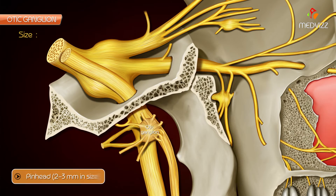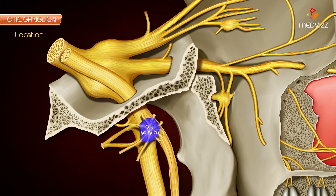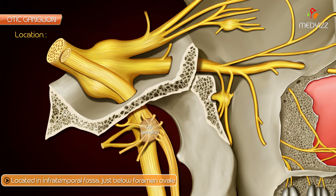Size. It is pinhead in size and measures about 2-3 mm. Location. It is located in the infratemporal fossa, just below the foramen ovale.